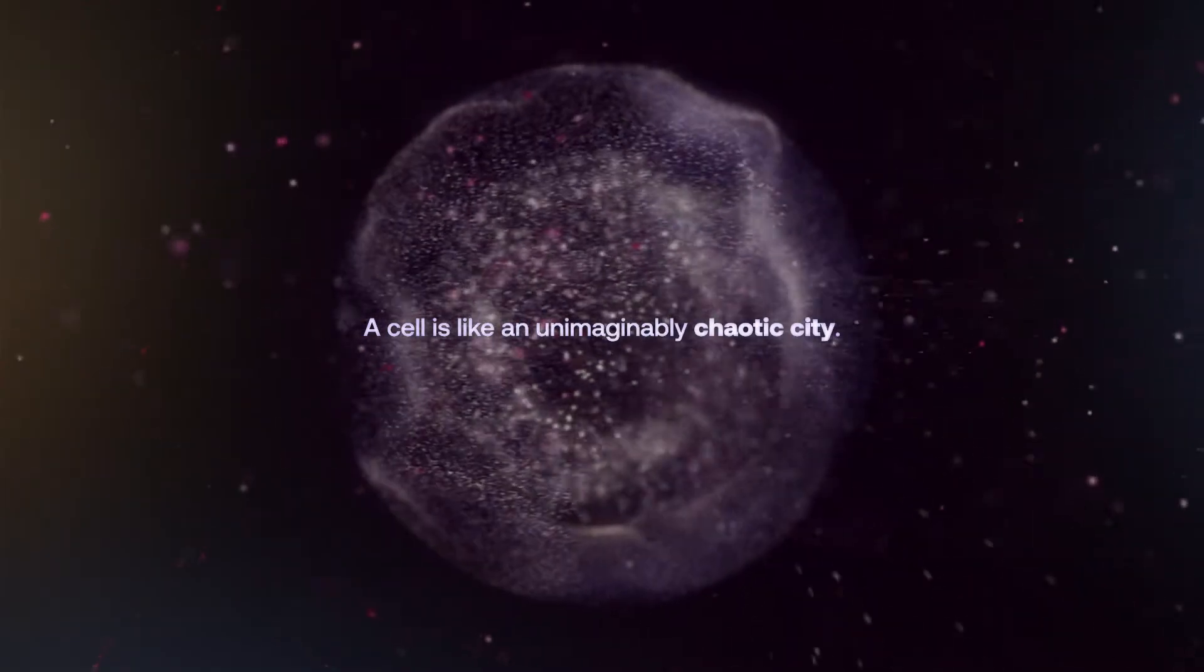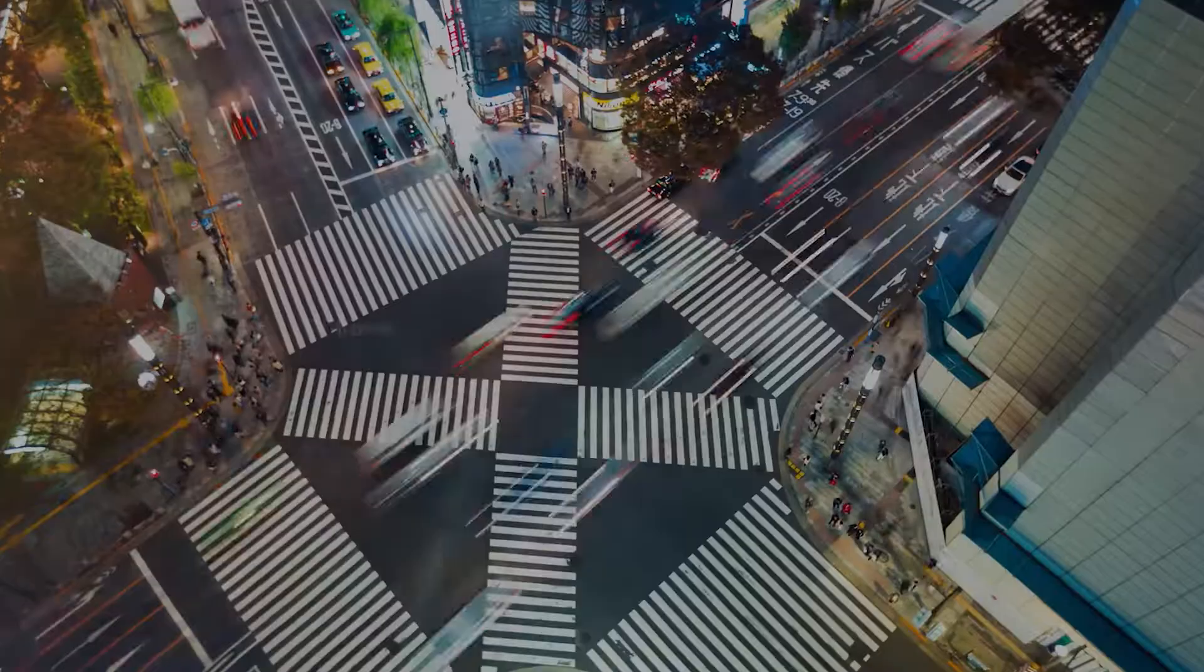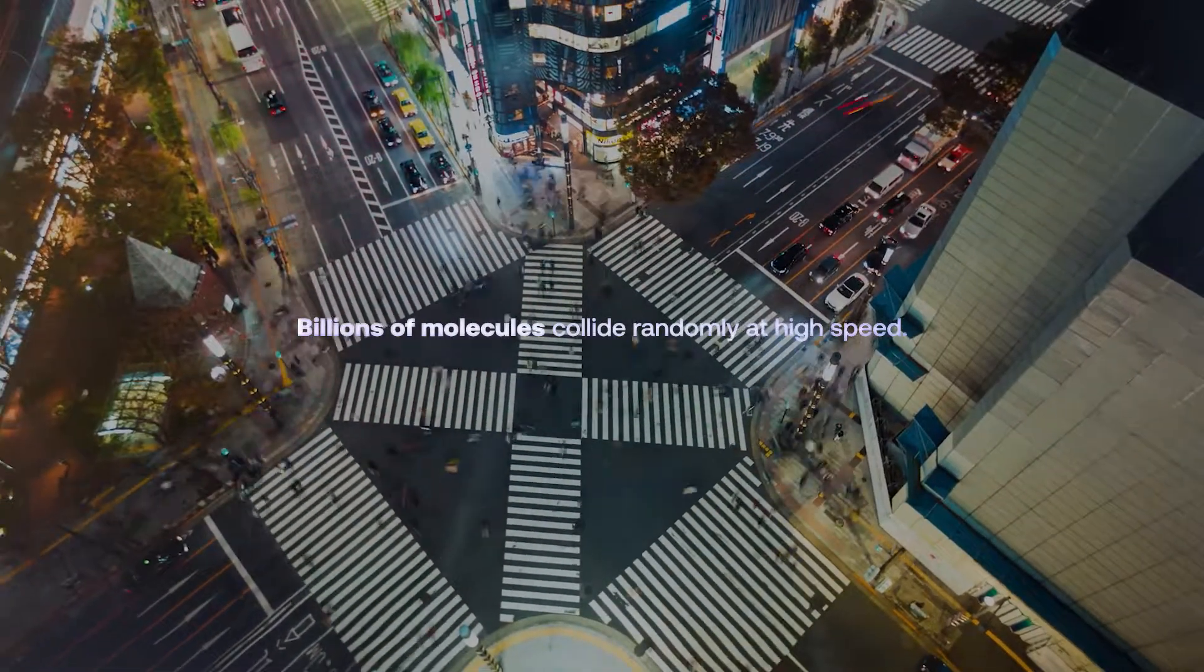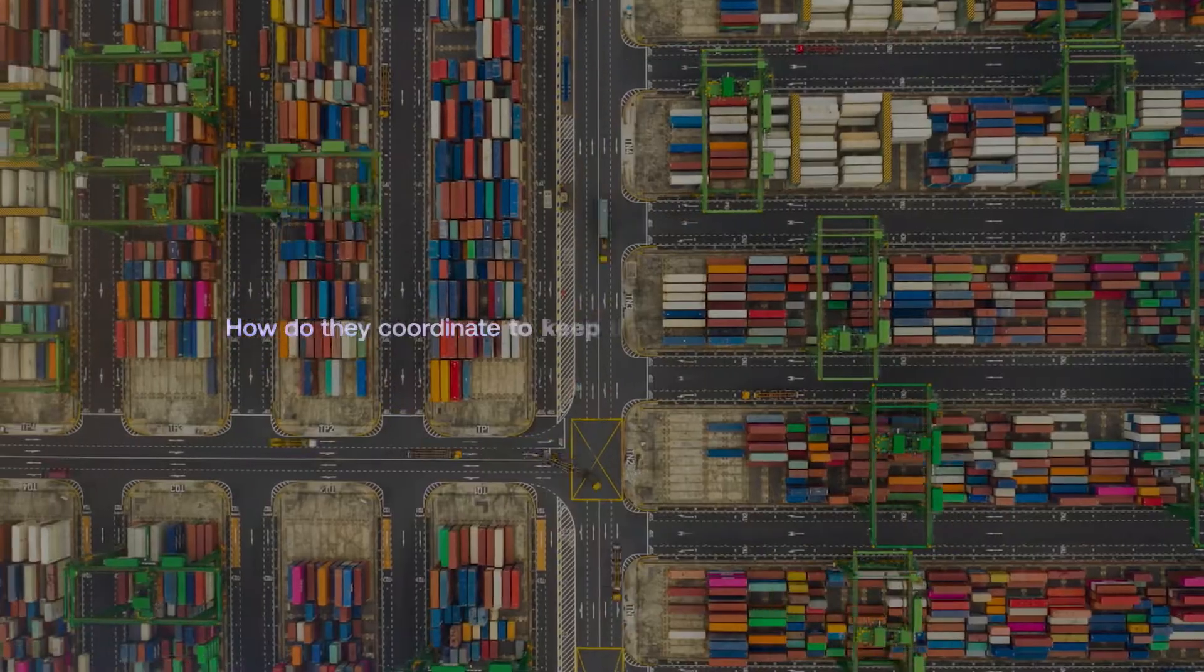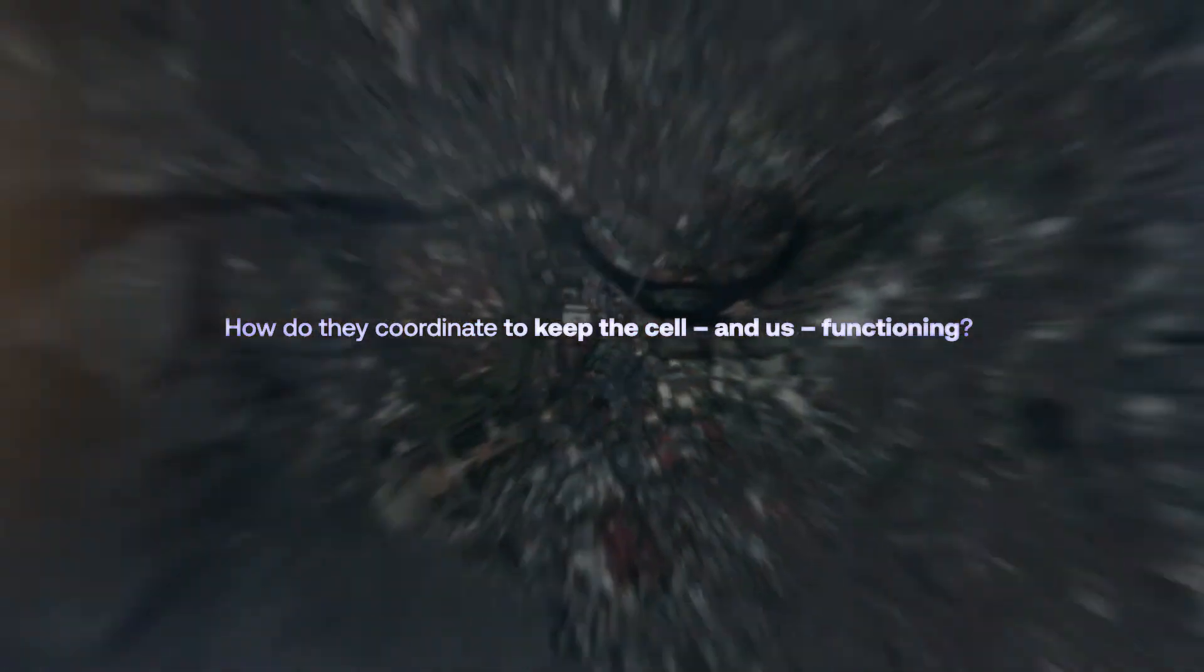A cell is like an unimaginably chaotic city. Billions of molecules collide randomly at high speed. How do they coordinate to keep the cell and us functioning?